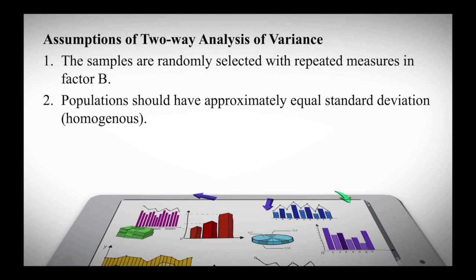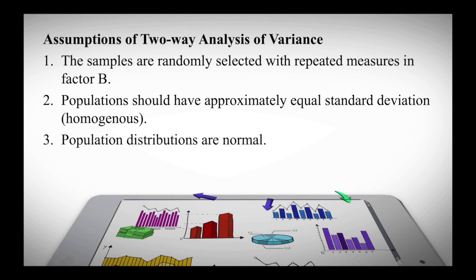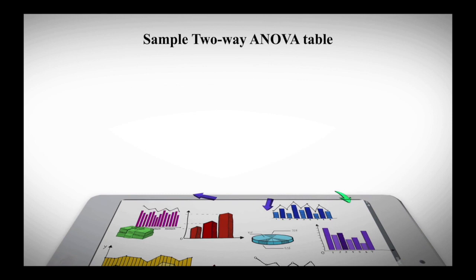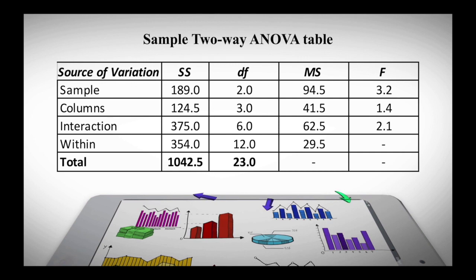For the second assumption, populations should have approximately equal standard deviation — what we call homogeneous data. For the third assumption, the population distributions must be normal, so your data must undergo a normality test. The fourth assumption is that population covariances are equal.